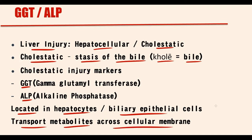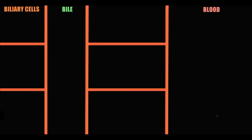The function of these enzymes is to transport metabolites across the cellular membrane. So to explain how bile stasis causes elevation in both gamma-glutamyl transpeptidase and alkaline phosphatase, here we have biliary cells, bile compartment, and blood compartment.